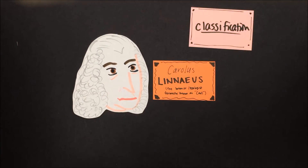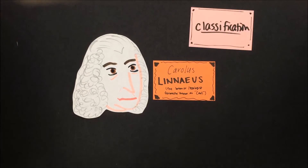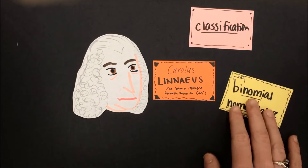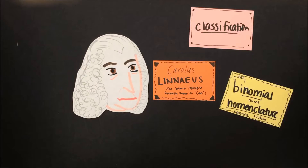Our modern system of classification is based on the work of Swedish botanist and zoologist Carl Linnaeus. Linnaeus changed his name from Carl to Carolus in his writing because he often was writing in Latin, the language of scientists at the time. Linnaeus wrote about, observed, and classified many species of plants and animals — those were his two main categories of life. Although we recognize more categories of life today, we still follow Linnaeus's convention of using two names, or binomial nomenclature, when classifying organisms.